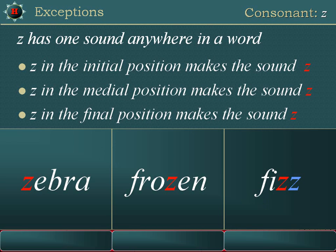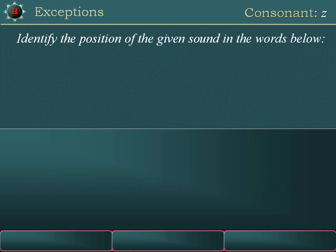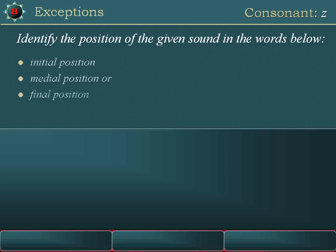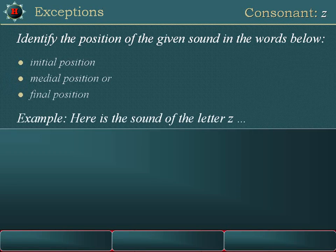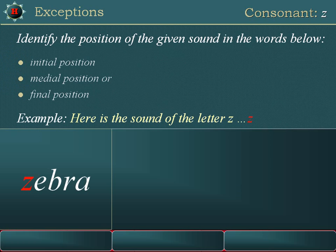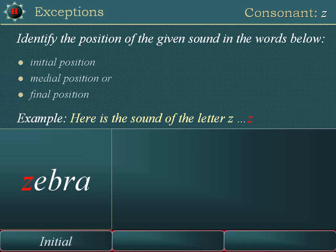Consonant Z can be silent. Identify the position of the given sound in the words below: initial position, medial position, or final position. Example: here is the sound of the letter Z — /z/. Zebra.